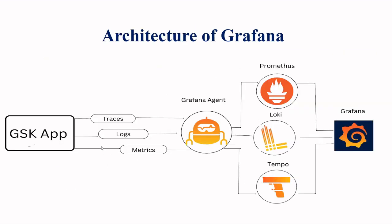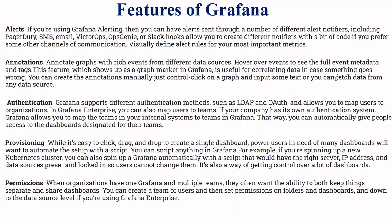Next is the architecture of Grafana. The architecture includes the Grafana agent, Prometheus, Loki, and Tempo. These connect to Grafana itself, with three data source types: traces, logs, and metrics. This is the overall architecture of Grafana.